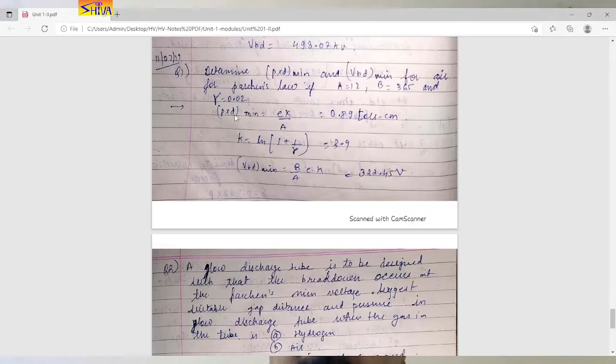P is taken in torr and d is taken in centimeter. So 0.89 torr centimeter. Next is computation of minimum breakdown voltage.